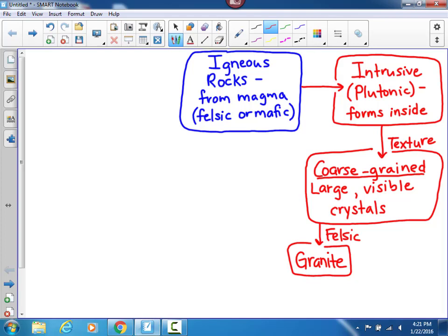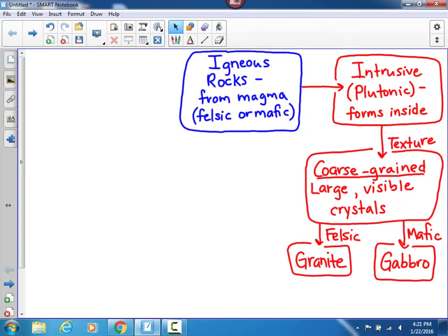The other one is the mafic rock, which would be generally dark-colored. And that one is called gabbro. Granite and gabbro are the two intrusive rocks that you will have to identify during your lab.